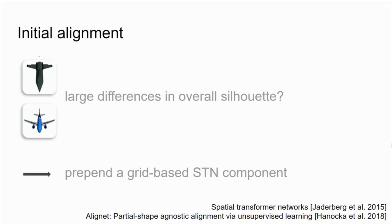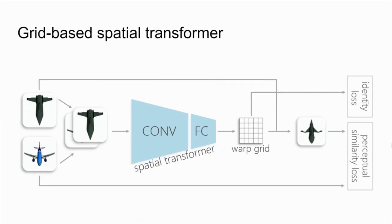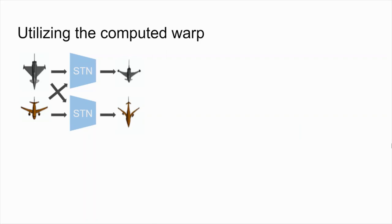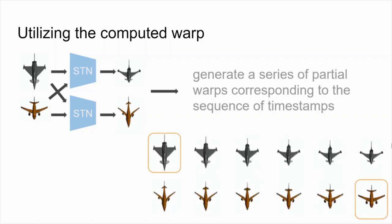We deal with this issue by prepending a spatial transformer component that performs grid-based freeform deformation. This network receives as input the two images concatenated channel-wise and outputs a warp grid. The source image is warped according to this grid, and the result is compared to the target image via a perceptual similarity loss that focuses only on the overall shape and overlooks the finer details. An identity loss prevents the grid from overwarping. We compute two warps: one from source to target and another from target to source. We then generate a series of partial warps such that each corresponds to one timestamp within a morphing sequence. The original source can be seen at the top left, followed by a series of warp versions that gradually transform into a shape similar to the target. The reverse transformation from target to source appears at the bottom, starting from the right.